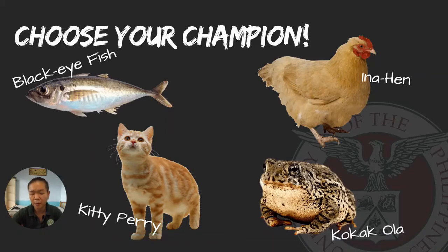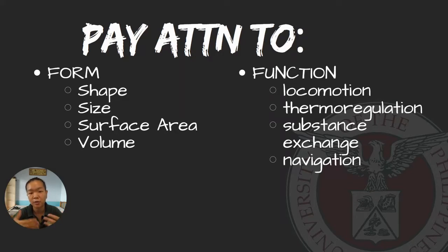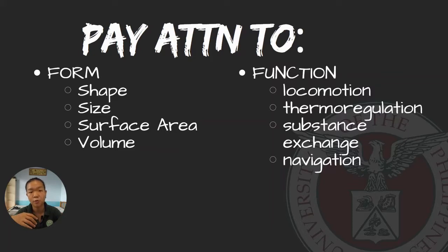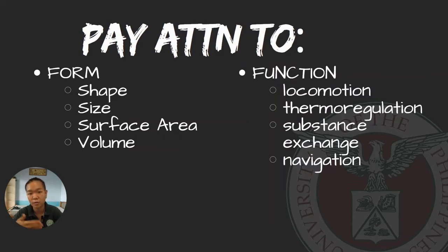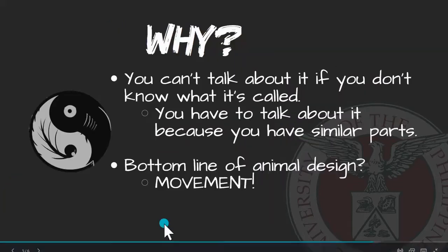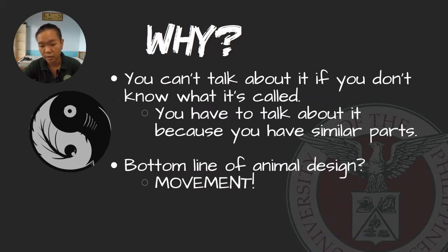Apart from identifying parts, I'd really hope for you to reflect on and relate the parts to their function. There's a reason why they look so different from each other. Think not just about the part itself, but also about the form — its shape, size, surface area, and volume. With a good idea of form, you can relate that to function: is it used for movement, regulating body temperature, exchanging nutrients with the environment, or navigation?